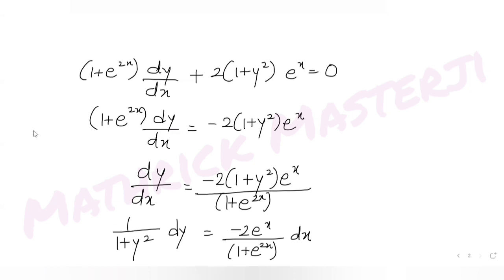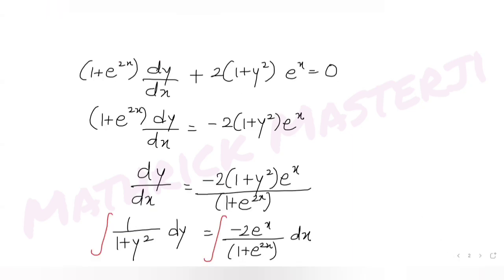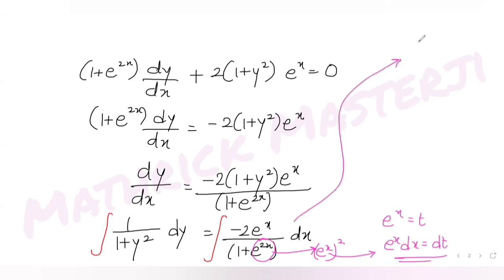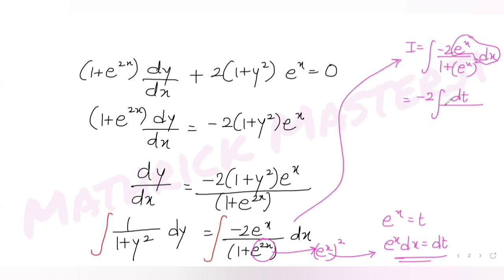Integrating both sides — the left side with respect to y, the right side with respect to x. For the right-side integral, I write e^(2x) as (e^x)² and substitute t = e^x, so e^x dx = dt. The integral becomes -2∫dt/(1 + t²).